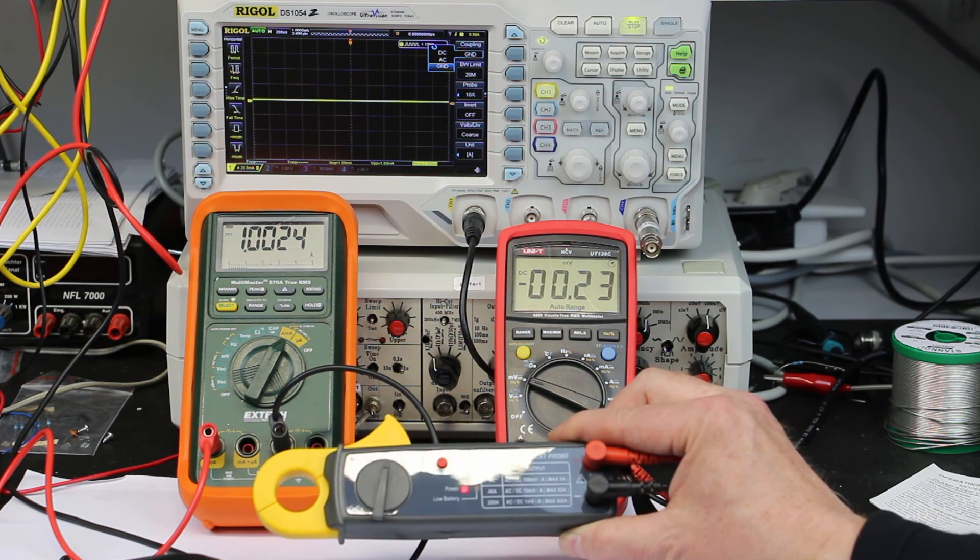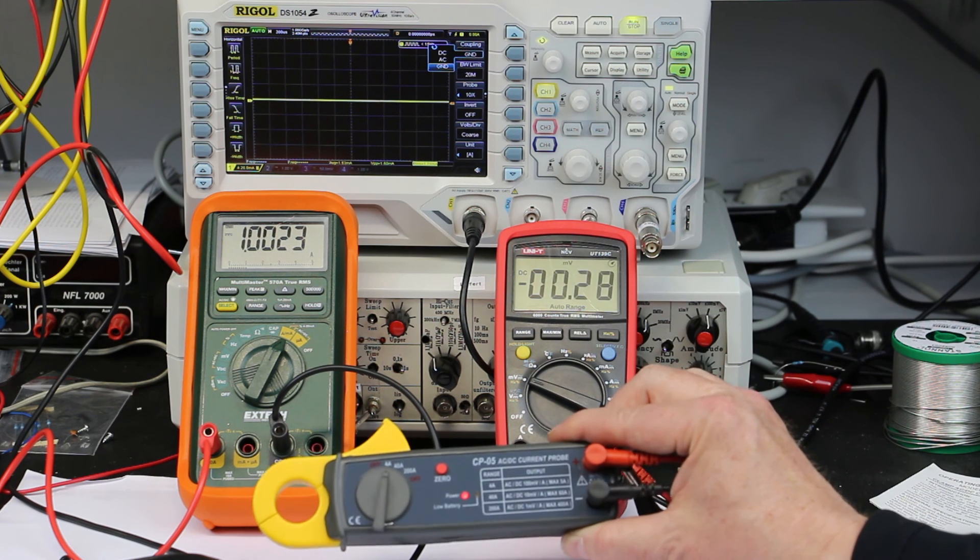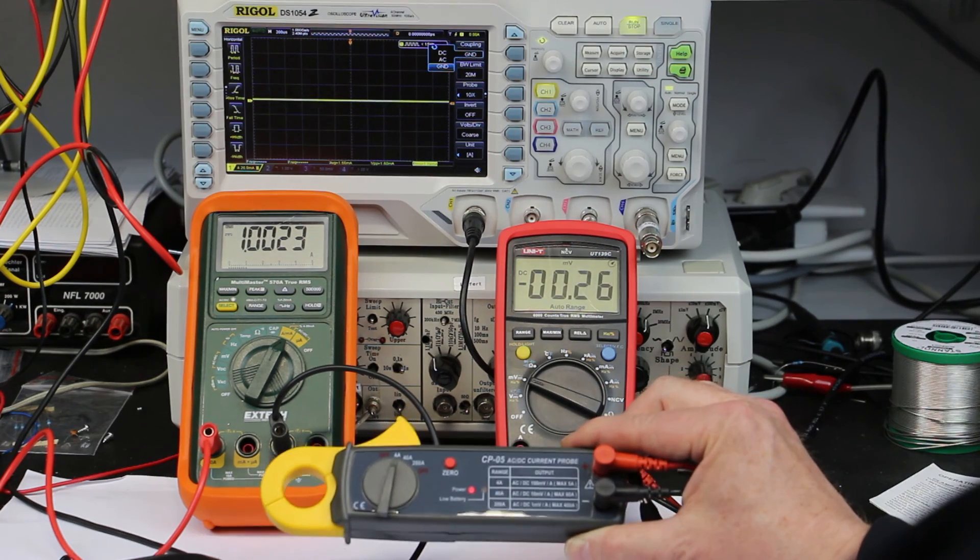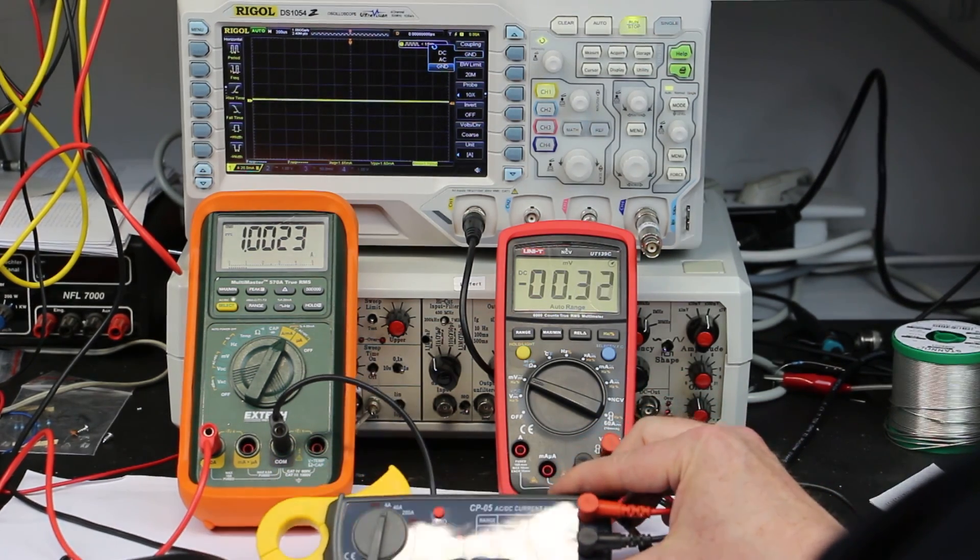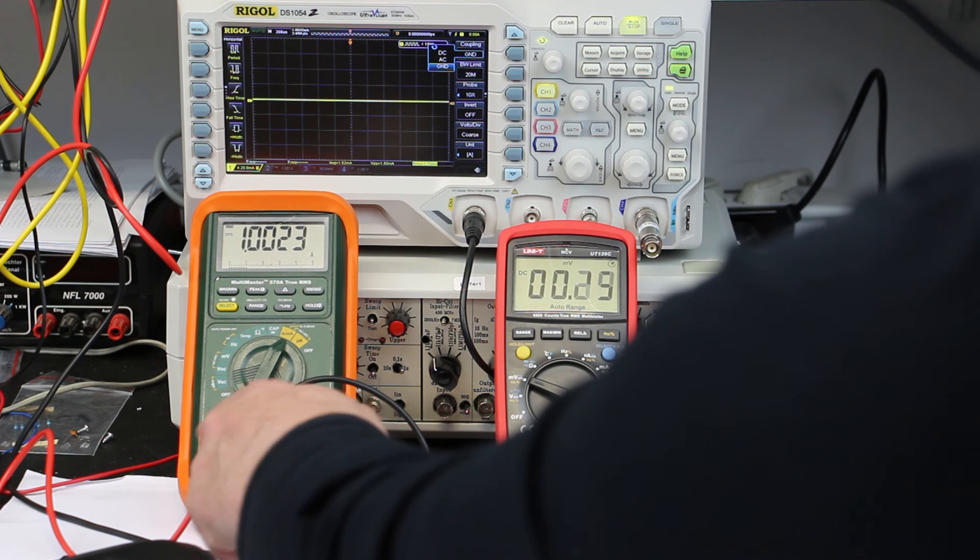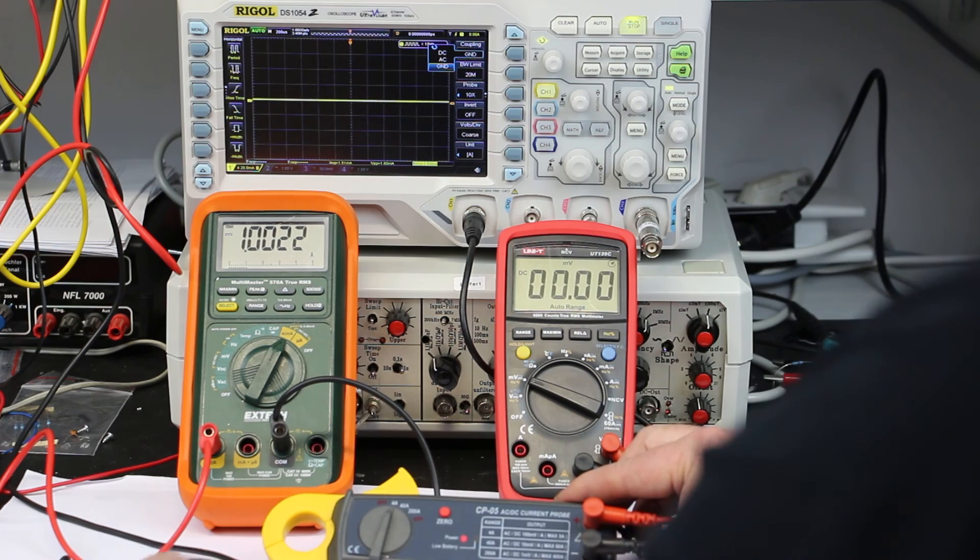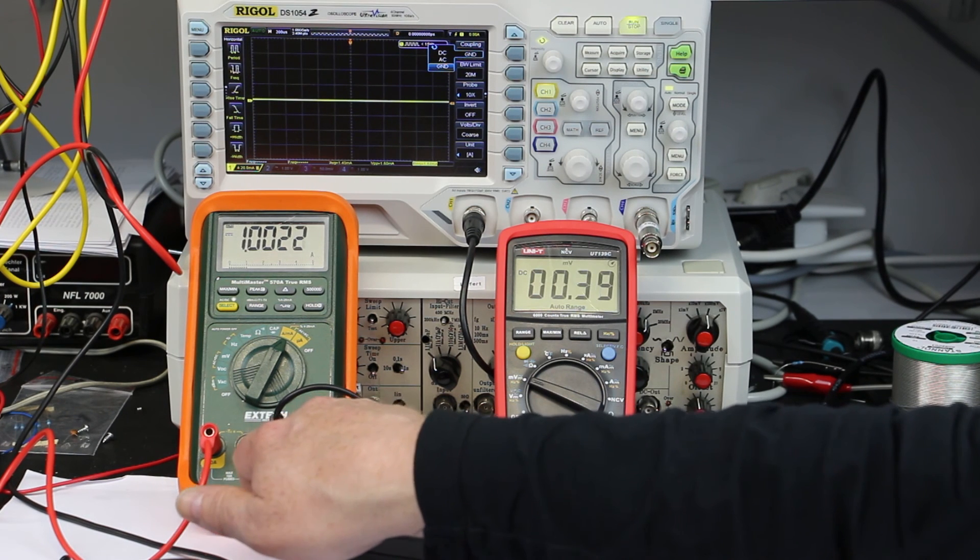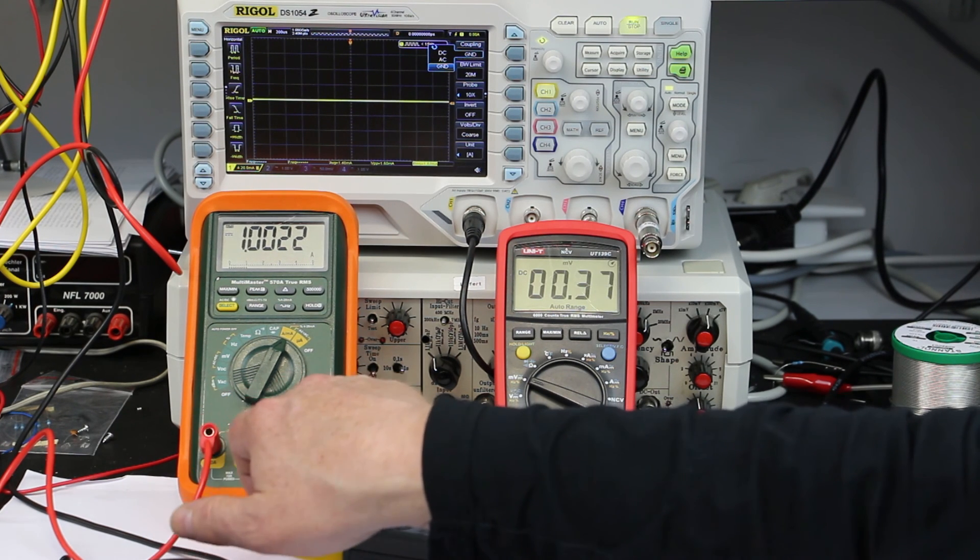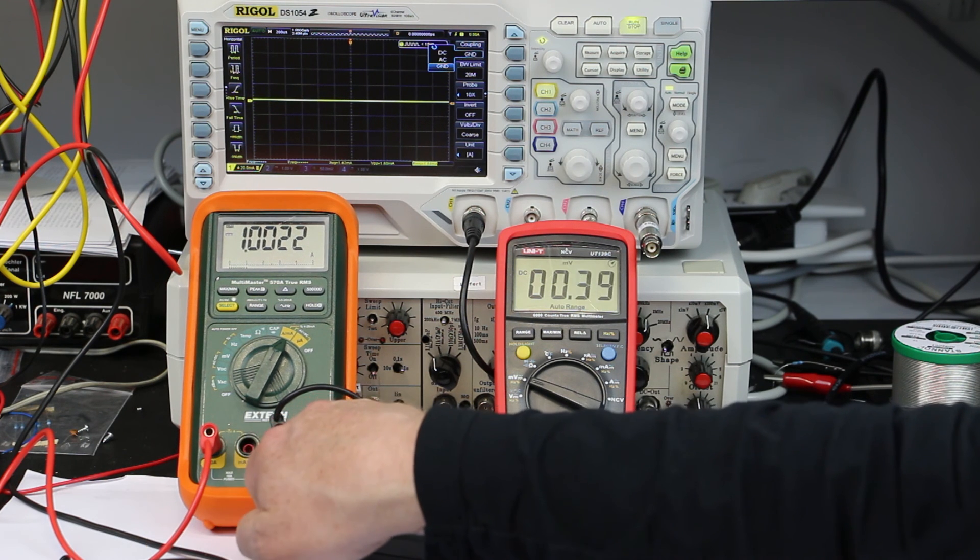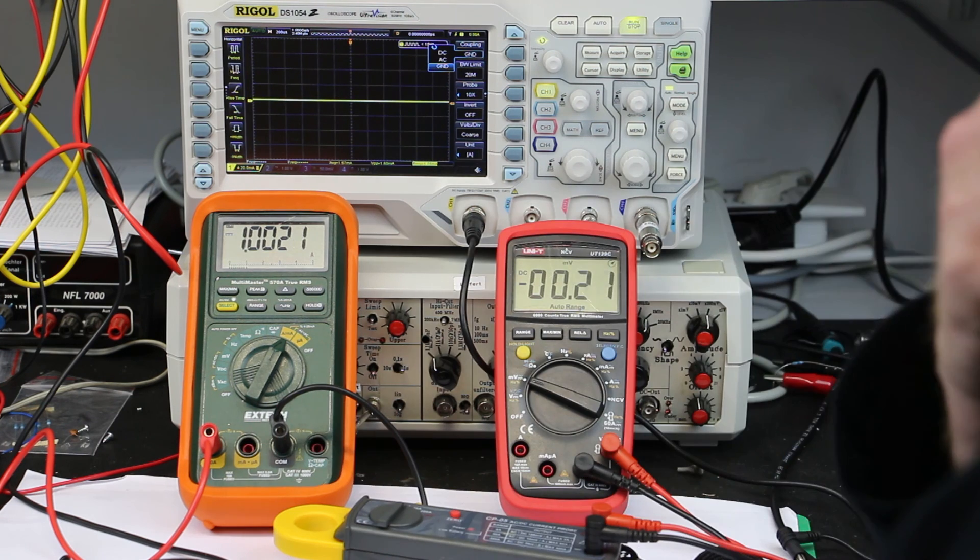I've already made a separate video of how these clamp meter type current probes work. They are totally different to a standard current measurement which you know from your multimeter. This here always works with the same principle. You have a shunt resistor inside, let's say 10 milliohms, and you measure the voltage that is generated by the current flowing through the shunt resistor. And that's the standard way of measuring current.